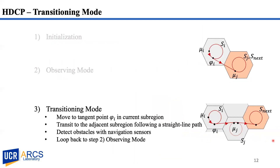Once the next subregion is selected, the robot enters transitioning mode. Suppose at the end of the observation task, the robot is at position mu on the circular path in subregion SI. Let S-next be the selected goal subregion, shown in orange color. The top figure shows the scenario when S-next is adjacent to SI. The bottom figure shows the scenario when S-next is not adjacent to SI, and S-next refers to a subregion on the feasible path to S-next.